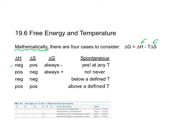We could have a negative positive, a positive negative, a negative negative, or a positive positive. Those signs will influence what is the sign of delta G.